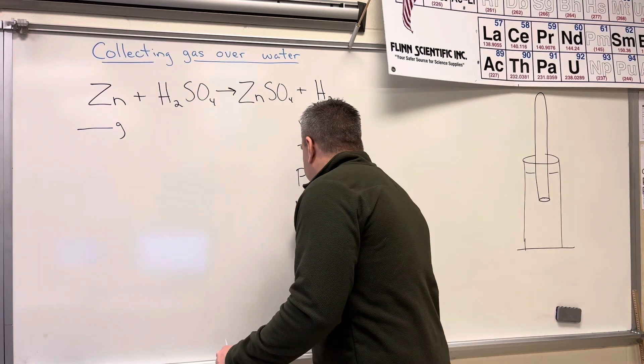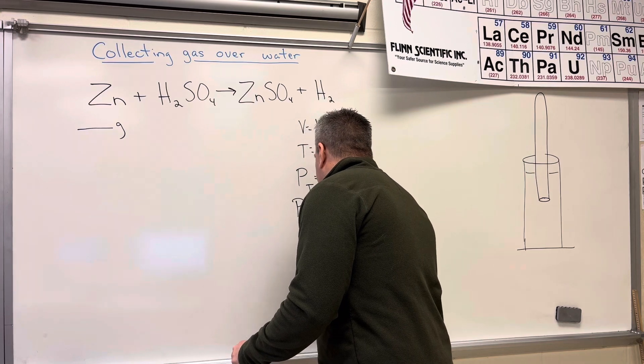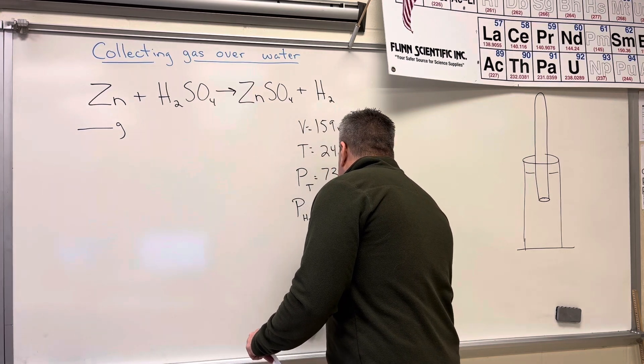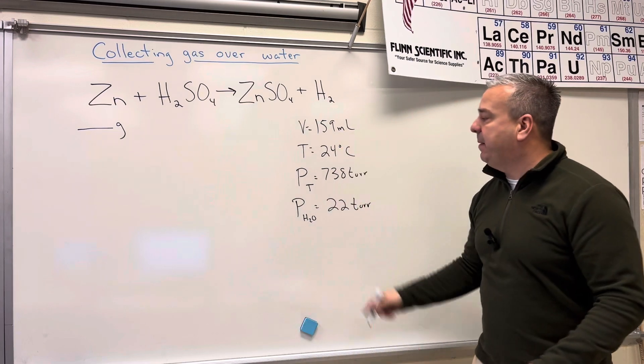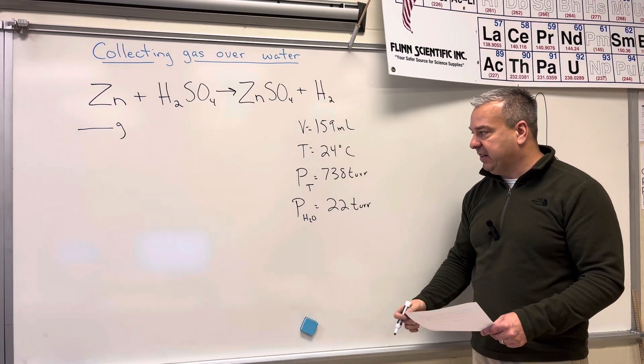And then it tells us a little bit more in the parentheses. It says the water vapor pressure at 24 degrees Celsius is found to be 22 torr. So I'm going to put the water vapor pressure is going to be 22 torr at this temperature of 22 degrees Celsius.